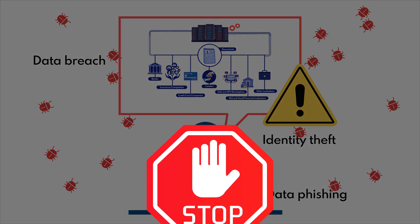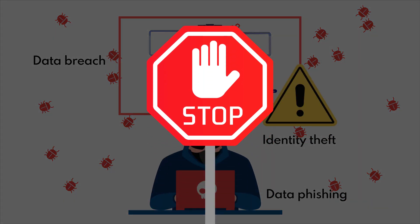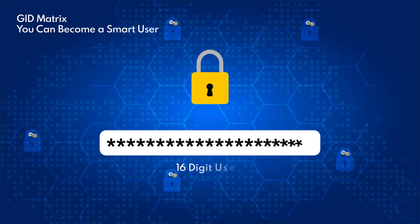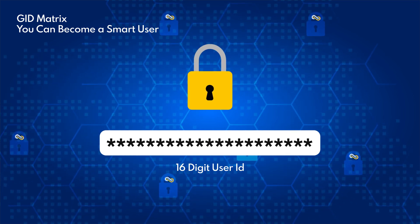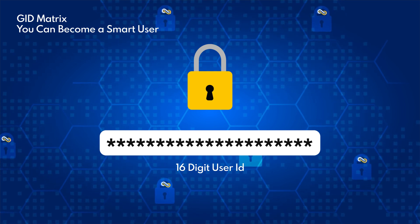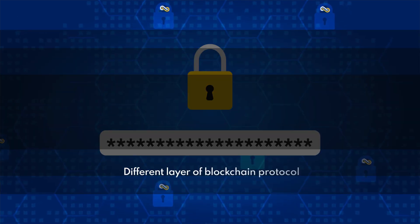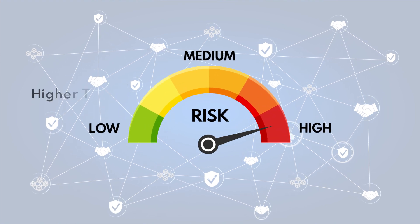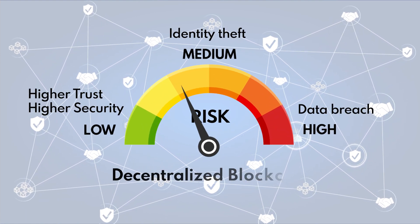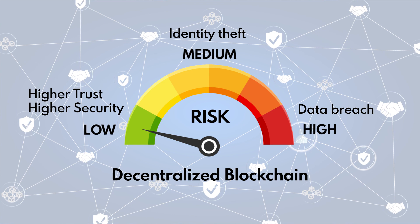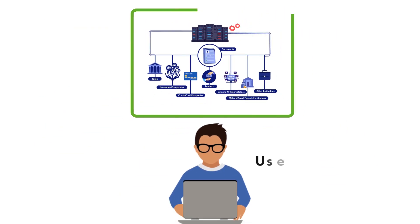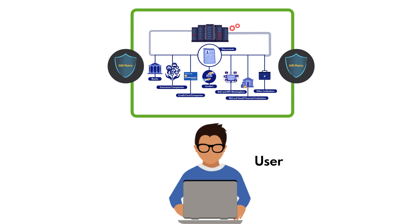But with GID Matrix, you can become a smart user. GID Matrix issues a 16-digit unique universal user identification number. It stores users' personal information in different layers of blockchain protocol, minimizing the risk of a decentralized network, and enhancing trust and security. It not only allows you to create your digital identity, but also makes you in charge of how and what personal information you want to share with others.